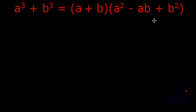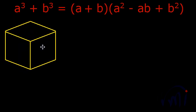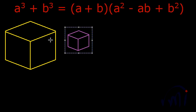Here we are going to learn the identity A cube plus B cube geometrically. So here I have A cube — the bigger one — whose volume is A cube and each edge is of length A. Now let me bring one B cube. Its volume is B cube and each side is of dimension B.